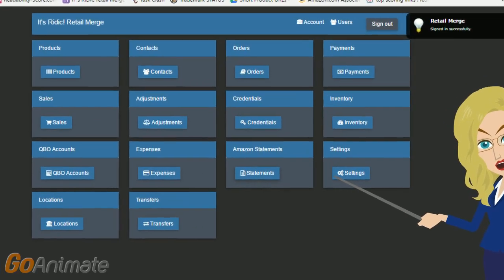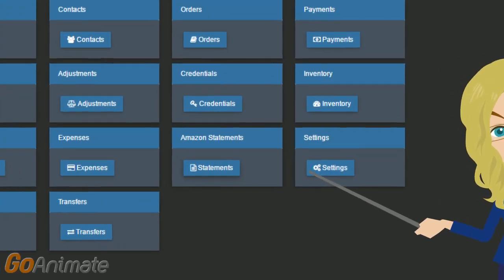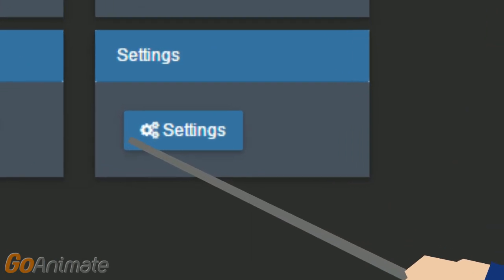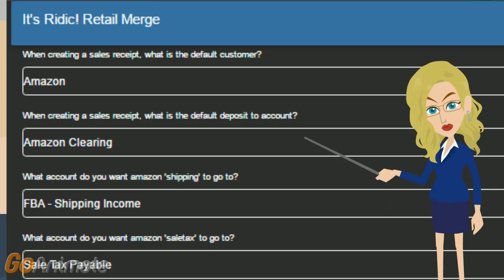Let's go ahead and review a few settings before jumping to QuickBooks. From the home screen of Retail Merge, click on Settings. If you look through this list, you may be overwhelmed, but it shouldn't take too long to get set up. As you go through, you will notice many similar expressions from expenses from Amazon. We need to just set up these accounts properly in QuickBooks, fetch the accounts into Retail Merge, and then answer the question properly.